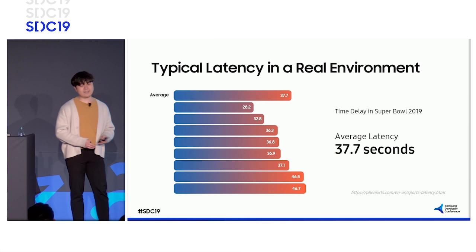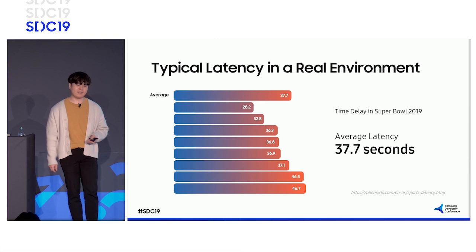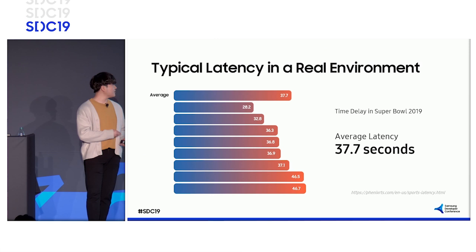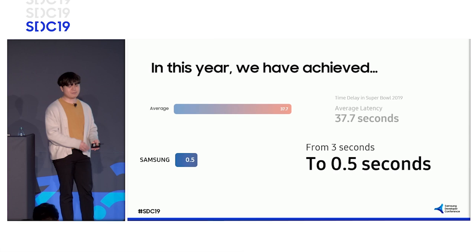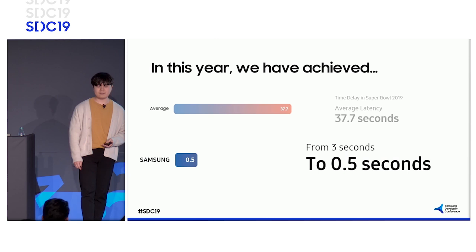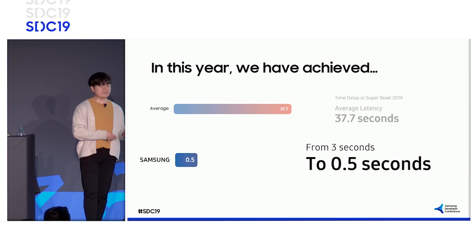This shows the actual latency data of live streaming providers in the Super Bowl this year. As you can see from this graph, the delay ranges from 28 seconds to 46 seconds at most. However, our efforts have finally shown a great result. We have achieved reducing latency under three seconds, and we can reduce it under half a second too. It's amazing.